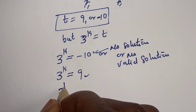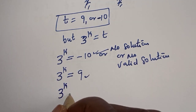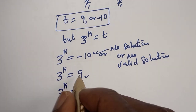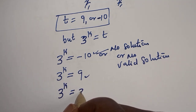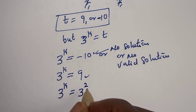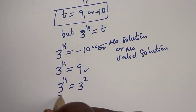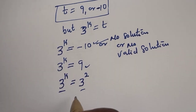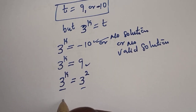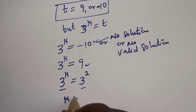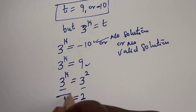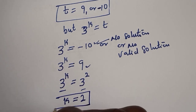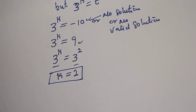T raised to the power k equals 9, which can be written as 3 raised to the power k equals 3 squared. We have the same base 3, so k is equal to 2. This is the final answer.